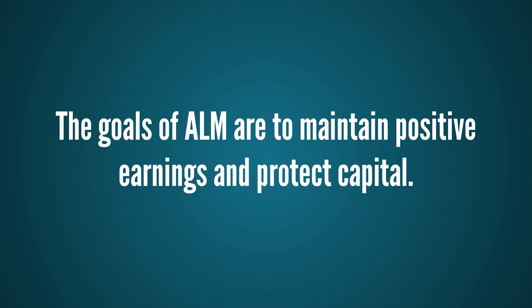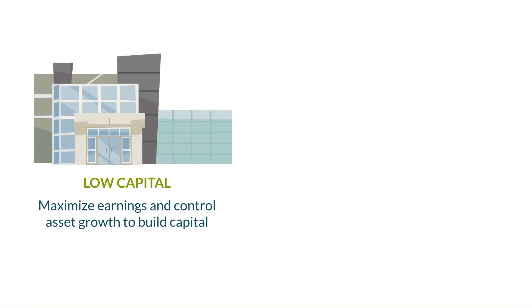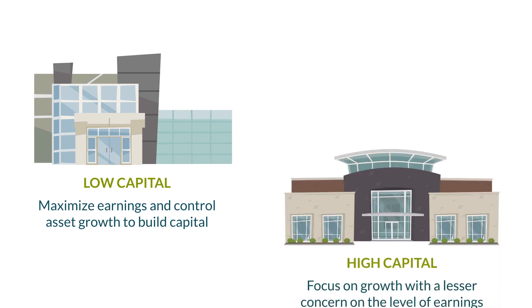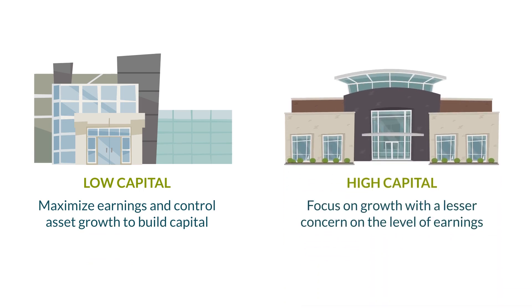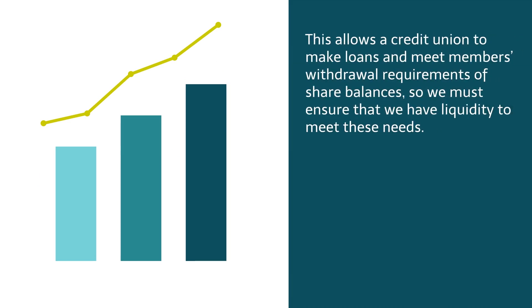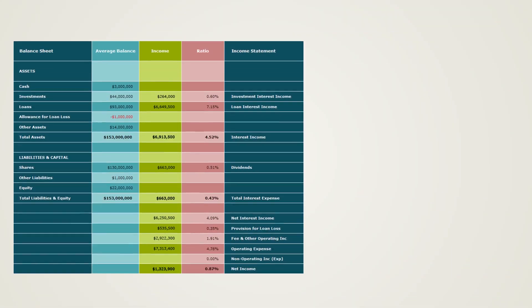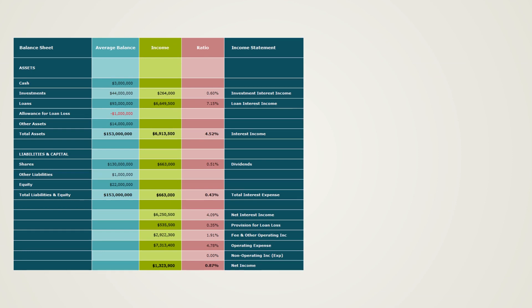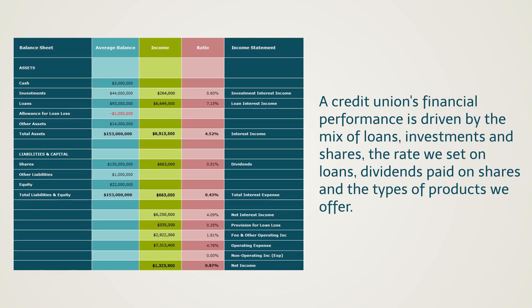The goals of ALM are to maintain positive earnings and protect capital. Some credit unions may want to maximize earnings to build capital, while others with high levels of capital want only enough earnings to maintain capital levels. Protecting the capital you've already earned provides a credit union with long-term viability to serve its members. We also want to maintain stable levels of earnings and capital. This allows a credit union to make loans and meet members' withdrawal requirements of share balances, so we must ensure that we have liquidity to meet these needs. Lastly, we manage risk and make decisions to balance the risk we take. The credit union's financial performance is driven by the mix of loans, investments and shares, the rate we set on loans, dividends paid on shares, and the types of products we offer.